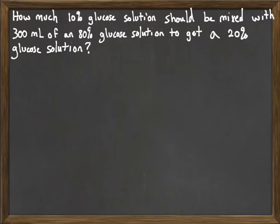So we have this higher concentrated glucose, and we're going to be using 300 milliliters of it. And we want to figure out how much 10% solution should we use to bring it down so that the overall mixture is 20%.